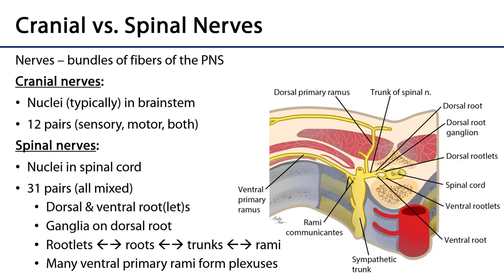The technical definition of a nerve is a bundle of fibers of the peripheral nervous system. So whether it's cranial or spinal, anything that we're talking about that is a nerve is of the PNS. Bundles of fibers within the central nervous system are known as tracts.